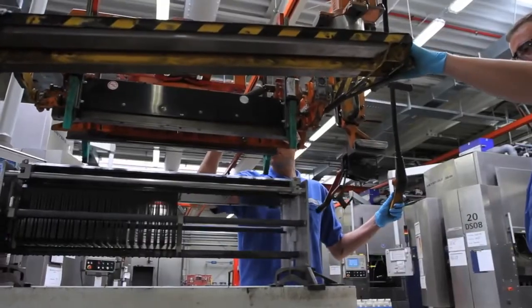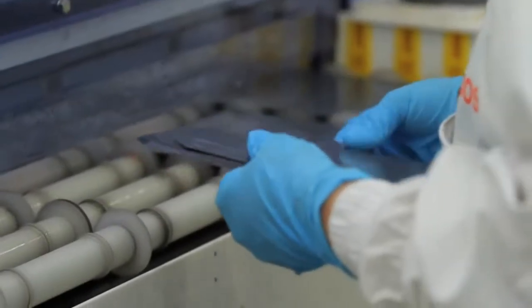Once the wafers have been cut, they are sent through a wash tunnel. This is because even the smallest piece of dust or dirt can compromise solar cell production.